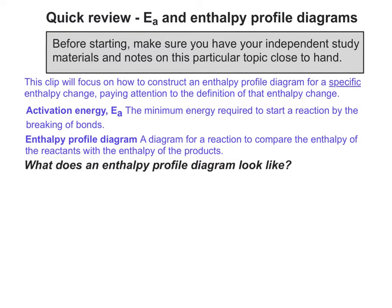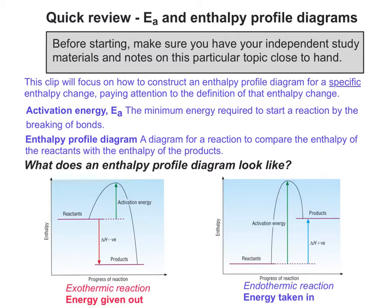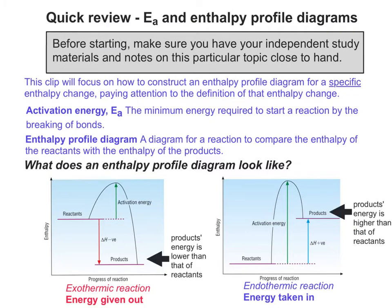So the first thing to think about is what does an enthalpy profile diagram look like? In general terms, this is what the enthalpy profile diagrams for an exothermic and an endothermic reaction might look like. What's really important when you're drawing them is firstly that you make sure that your products are placed in the right part of the diagram relative to the enthalpy axis, which is the y-axis, so the screen tells you which way around it should be.